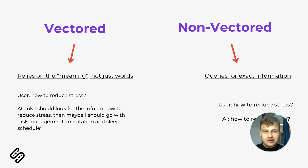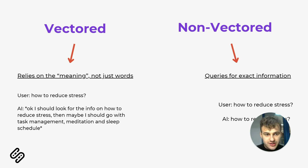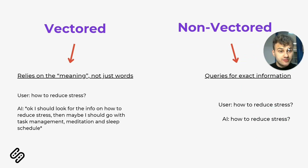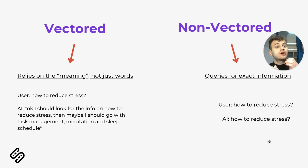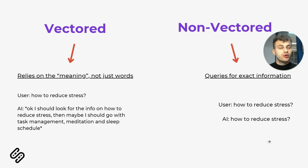But what if you don't need AI to understand the meaning, and you want exact specific data? For example, based on an account ID, you want to retrieve specific data from the database — then you go with non-vector data. If you search for 'how to reduce stress,' you will get the exact information if it exists in your database. The real trick is knowing when to use each. In coaching, you could use vector data to understand client sentiment, while non-vector data is great for pulling specific client records or progress reports.